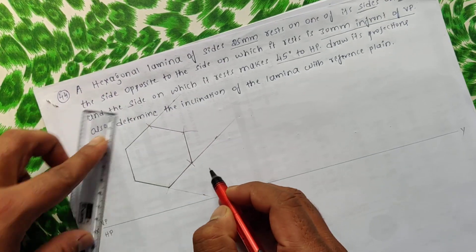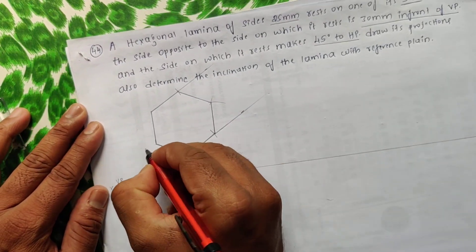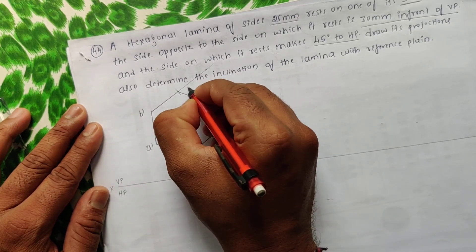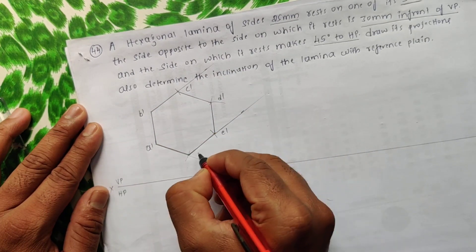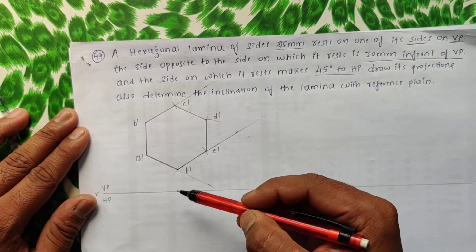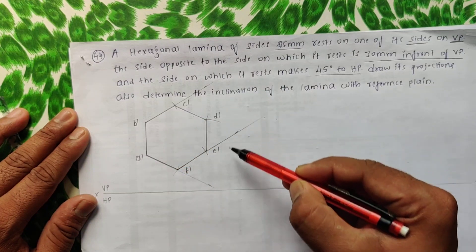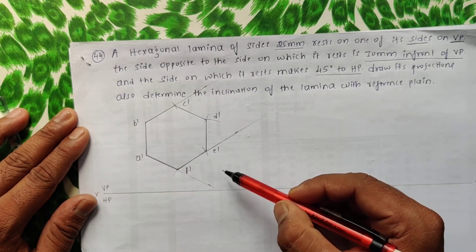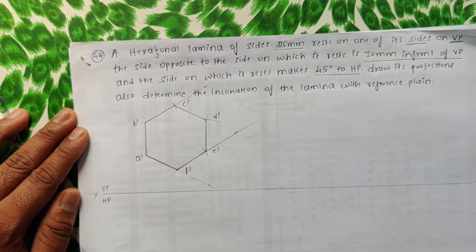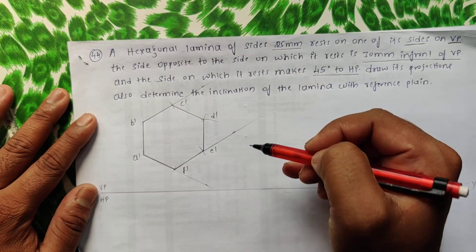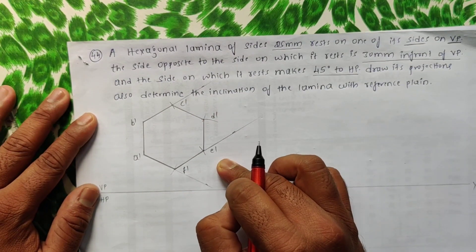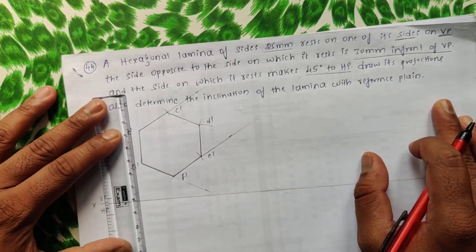Now let me name it. Since it's a front view, it is a-dash, b-dash, c-dash, d-dash, e-dash, and f-dash. In your solution book it has been named in this fashion, so to avoid confusion I am taking the same notations. You can name it any way you wish, but to avoid confusion I'm following the solution book.